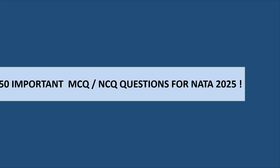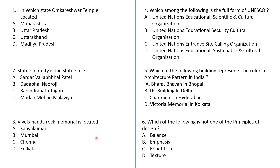Let's start with question number 1. You can answer the question and write it down in the comment section below, or you can just stay tuned. In which state is the Omkareshwar temple located? A. Maharashtra, B. Uttar Pradesh, C. Uttarakhand, or D. Madhya Pradesh. The correct answer for this is D — Madhya Pradesh.